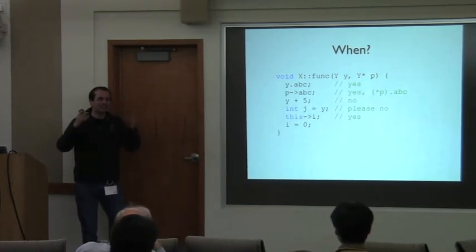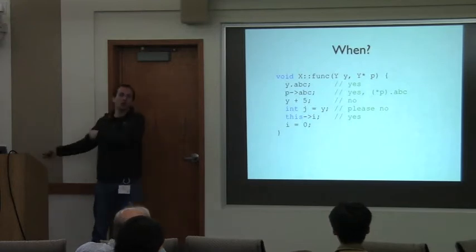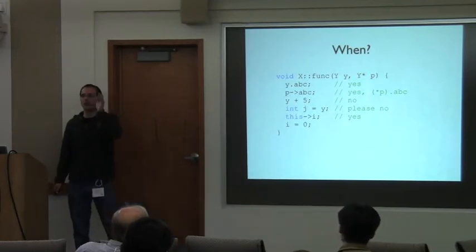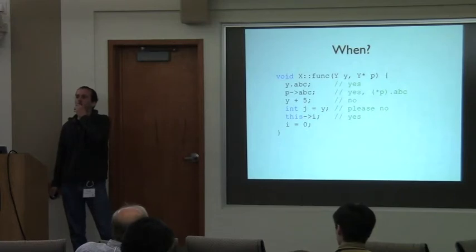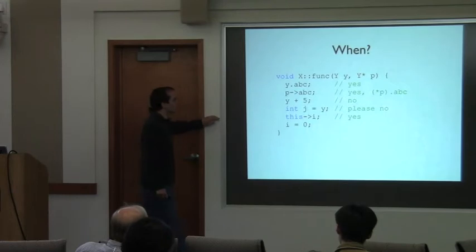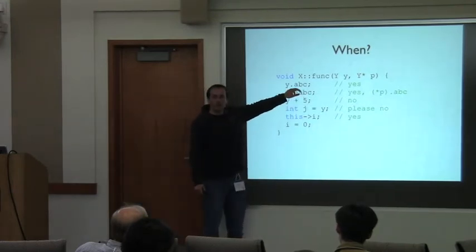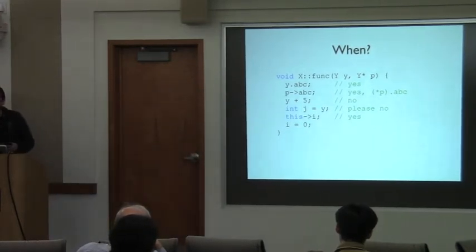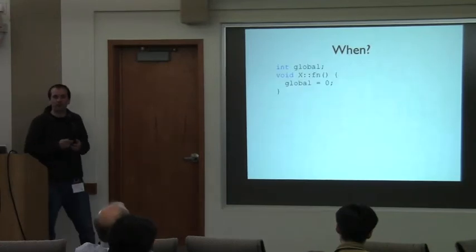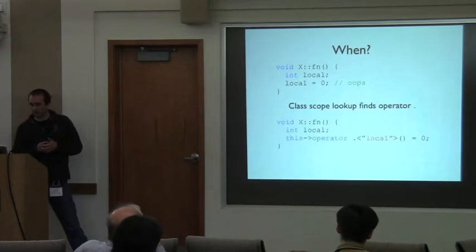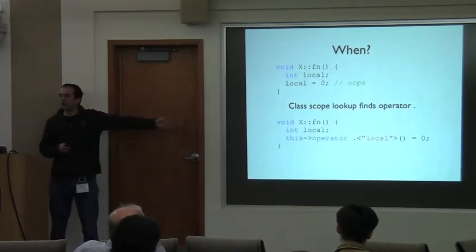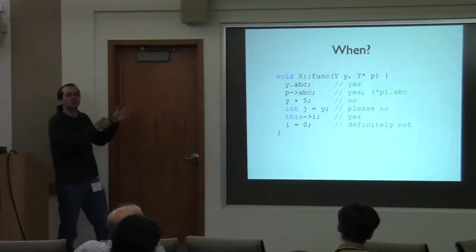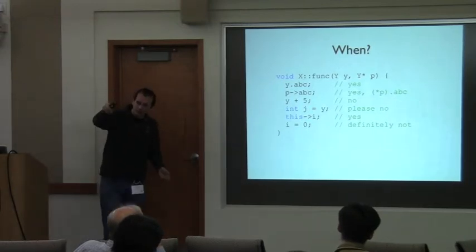Moving on: the discussion of whether pointer access through arrow should go through operator dot is taken offline. Coming back to local variables: if I make a typo inside a member function and accidentally enter operator dot, I don't want that. So I don't want unqualified names to ever go through operator dot — and that answers the earlier question about when member function calls don't go through it.